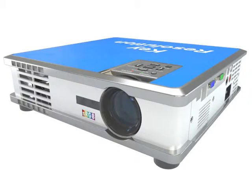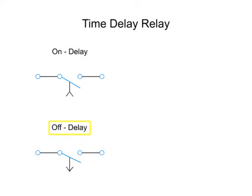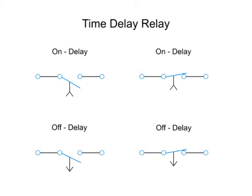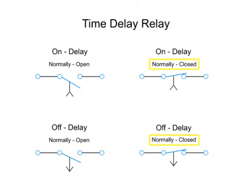Let's look at four basic types of relays. There are two types of relay functions, on delay and off delay, each with two types of contacts, normally open and normally closed, represented here by four symbols.